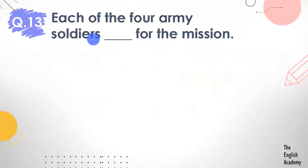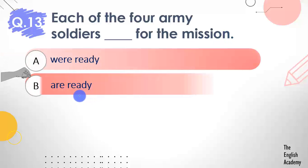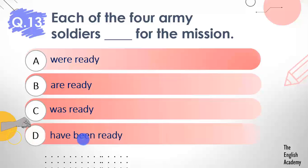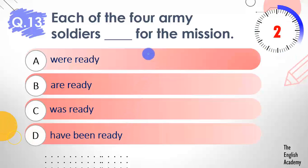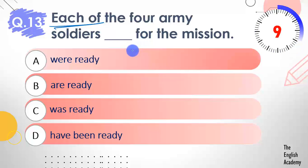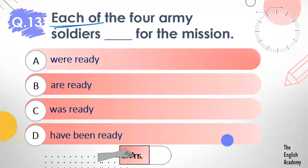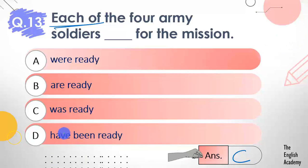Question number 13: Each of the four army soldiers ___ for the mission. Options: A) were ready, B) are ready, C) was ready, D) have been ready. When we use 'each of', the verb that follows is always singular. The answer is option C — was ready. Whenever 'each' is used, the verb will be singular.